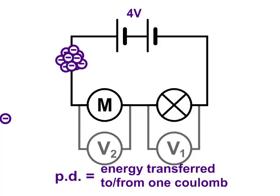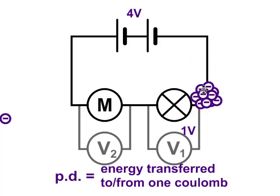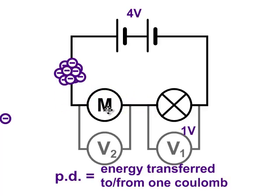In this example, the potential difference across the bulb is only one volt. That means of the four joules of energy this coulomb of charge picks up at the cells, only one joule of energy goes to the bulb. Therefore, how many joules of energy go to the motor? It must be three joules.